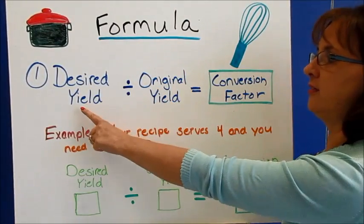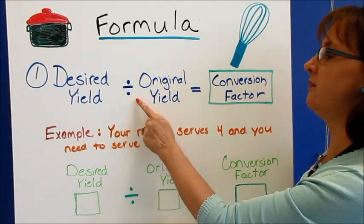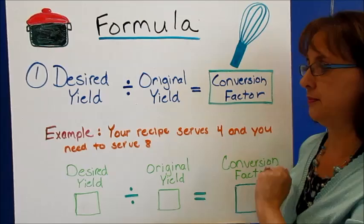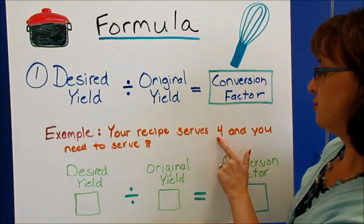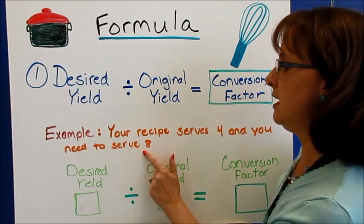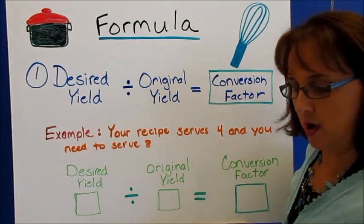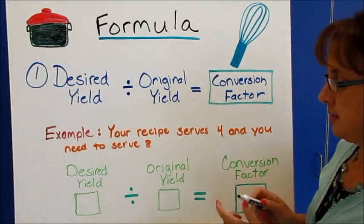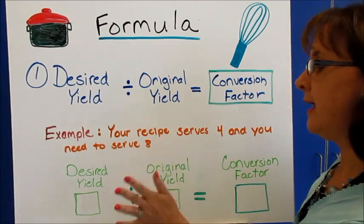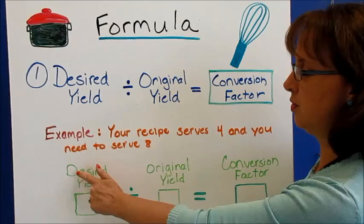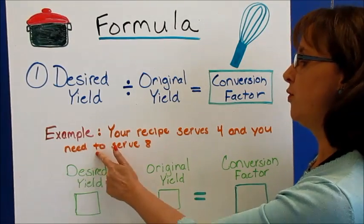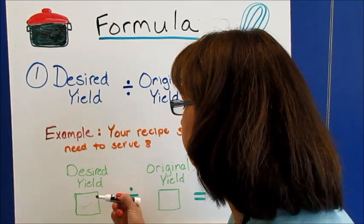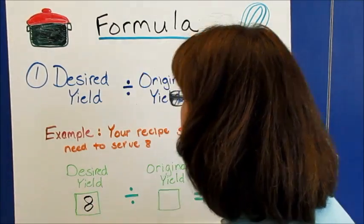We start with the formula: desired yield divided by original yield gives us our conversion factor. For example, your recipe serves four and you need to serve eight. Our desired yield is the yield that we want to end up with — it's what we desire. So if we need to serve eight, then our desired yield will be eight.